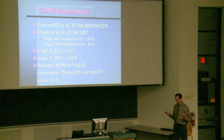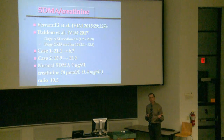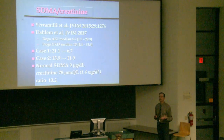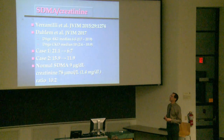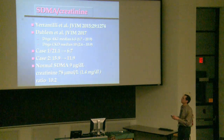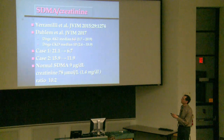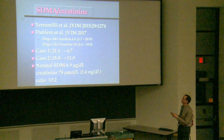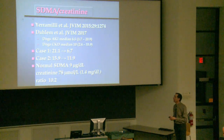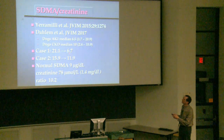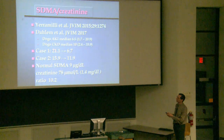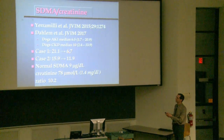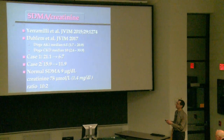Looking at SDMA-to-creatinine ratios: for dogs with acute kidney injury, the median SDMA ratio was 6.5 but up to 20.9; for dogs with chronic kidney disease, the overall ratio was about 10. For Louie, the SDMA ratio dropped from approximately 21 down to 6.7 — normal. For Honey, it dropped from about 16 down to 12. A typical normal ratio in dogs would be around 10.